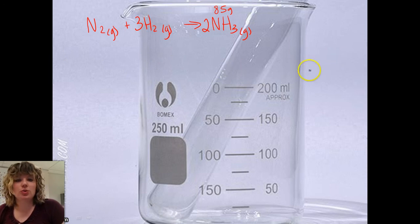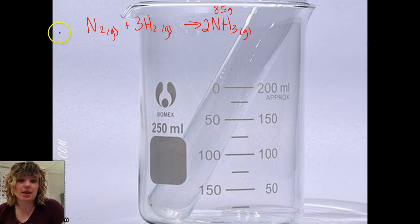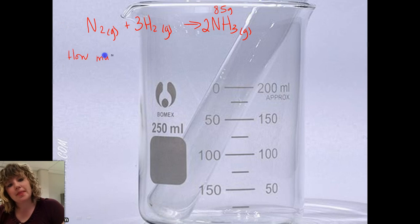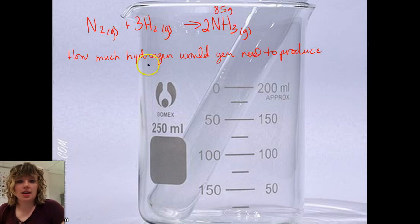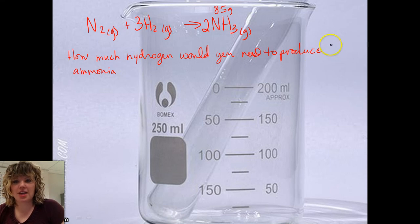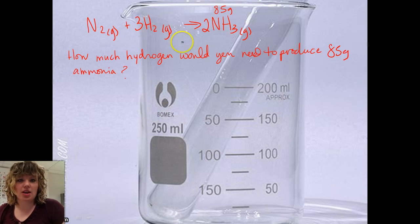And no matter if it's a word equation, if it says you have 85 grams of ammonia, how much hydrogen would you need to make 85 grams of the NH3? So that's what it would say. It would say, how much hydrogen would you need to produce ammonia. It would produce 85 grams of ammonia. So this would be our question. It might give you the equation or it might not, depending. You might have to write it out from the word equation.